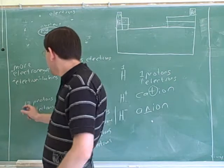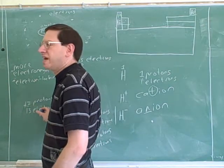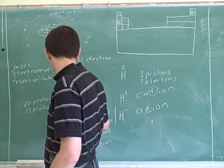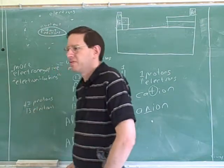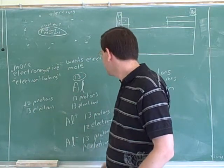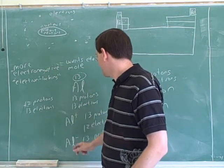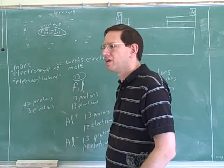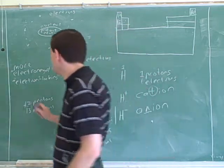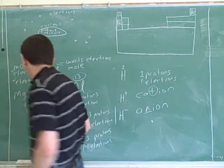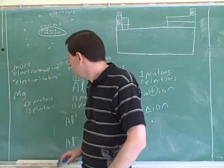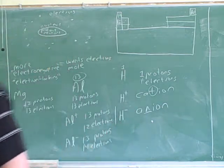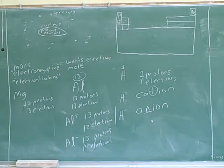Now, what is the name of this element? What is this element if I take one proton away? What symbol should I give it? This was Al, this was Al plus, and this was Al minus. So what would this be? Magnesium, Mg? Yeah. Because now you have to look up who has the atomic number of 12. And if you go to the periodic table, that's magnesium. Magnesium has the atomic number of 12.